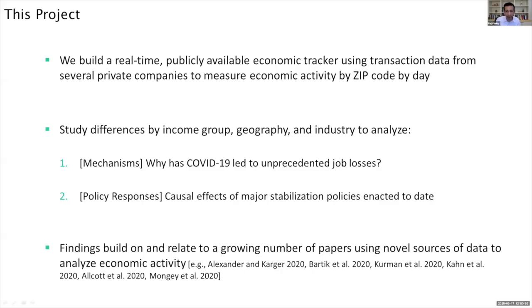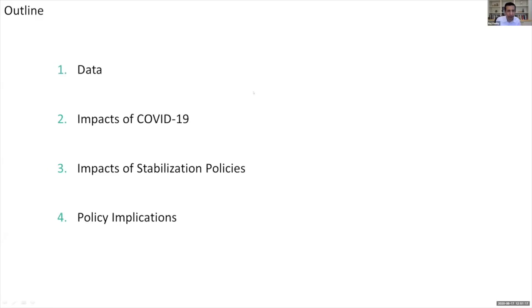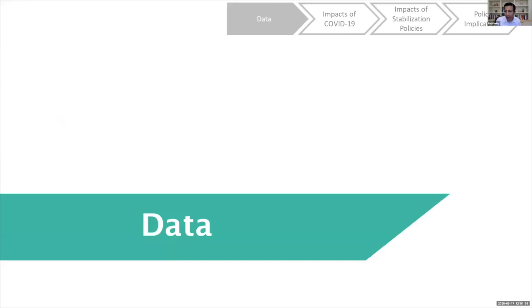What we're doing in this project is trying to address that limitation by building a real-time, publicly available economic tracker using transaction data from several private companies, allowing us to measure economic activity — consumer spending, employment rates — by zip code by day. We'll apply that data to study the COVID-19 crisis, disaggregating by income group, geography, and industry. We'll analyze two sets of questions: first, understanding the mechanisms through which COVID-19 has affected the economy and why this crisis led to such unprecedented job losses; second, examining the recent policy responses — stimulus programs and loans to small businesses — to evaluate their impacts and understand what policy solutions might be most valuable going forward.